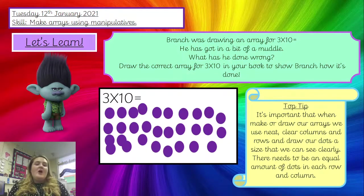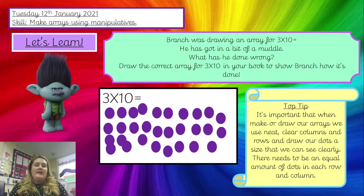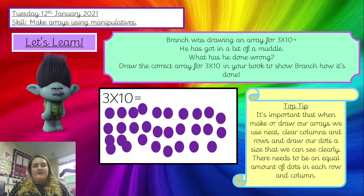What I'd like you to do now is write three times ten equals in your book, and have a go drawing your own array. Think about how many rows and how many columns you will need for three lots of ten, and draw that now. Pause the video, or you could also use your printed counters to make that array if that's easier.